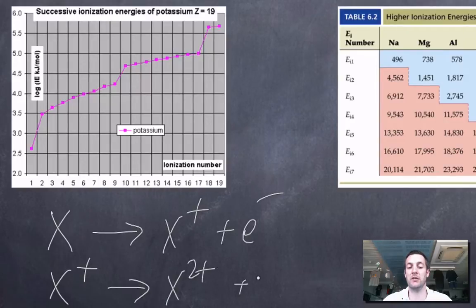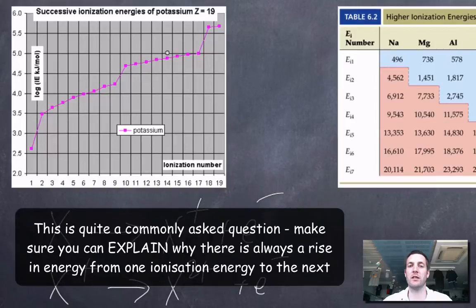If you think about it, it doesn't really matter what your particle is. You'd expect it to be harder to remove the second electron than it is to remove the first because the first electron is coming from a neutral atom. The second electron is coming from something that's already positive. So there's going to be a stronger attraction between something that's positive and a negative particle than between something that is neutral.